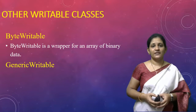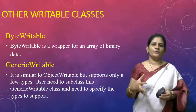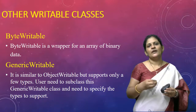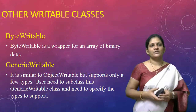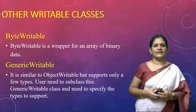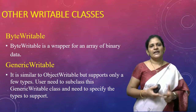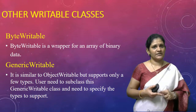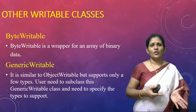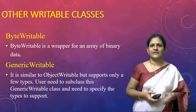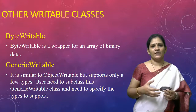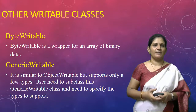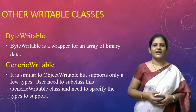BytesWritable is a wrapper for an array of binary data — to store a sequence of binary data we use BytesWritable. The last one is GenericWritable, which is similar to ObjectWritable but supports only a few types of data. The user needs to subclass GenericWritable and specify the types it supports. So we have discussed all writable classes: primitive writables, array writables, map writables, NullWritable, BytesWritable, ObjectWritable, Text, and GenericWritable. In the next class I'll cover a high-level example program using all these classes in MapReduce.